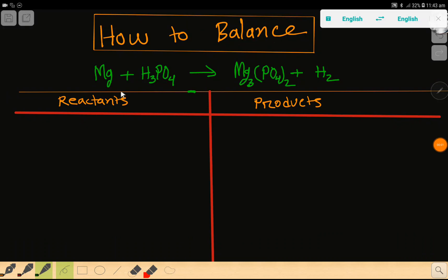Welcome to this class. Today we are going to balance this reaction: magnesium plus phosphoric acid yields magnesium phosphate and hydrogen. To balance this reaction, first we have to draw a table like this. This is the reactant side and this is the product side.